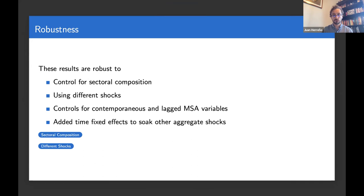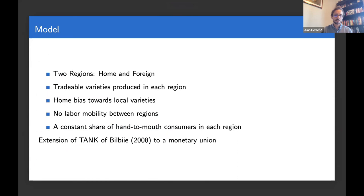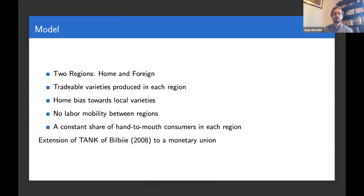When you take these results and apply the standard HANK model of a monetary union, we use that to understand what are the sources of variation that could explain this heterogeneity we see in the data. We have a very simple model — taken as a pedagogical example — with two regions that produce tradable varieties with home bias, no labor mobility across regions, and a constant but potentially different share of hand-to-mouth consumers in each region. This drives heterogeneity in the strength of demand effects across regions.